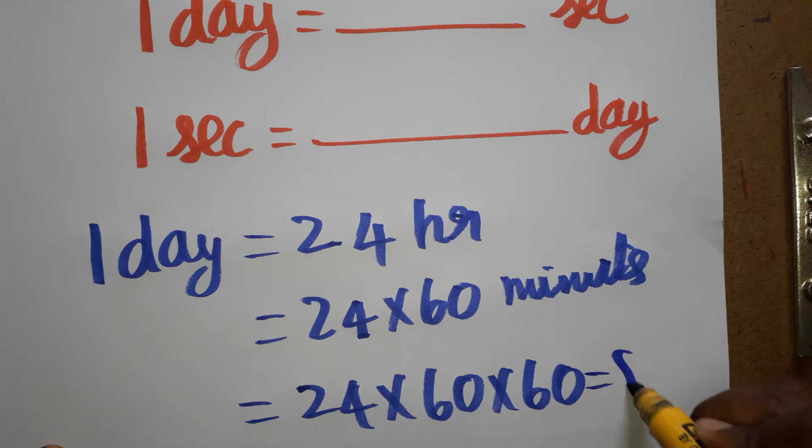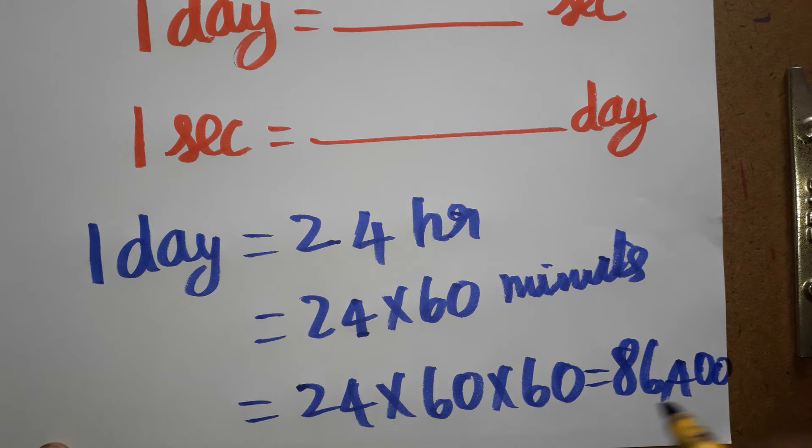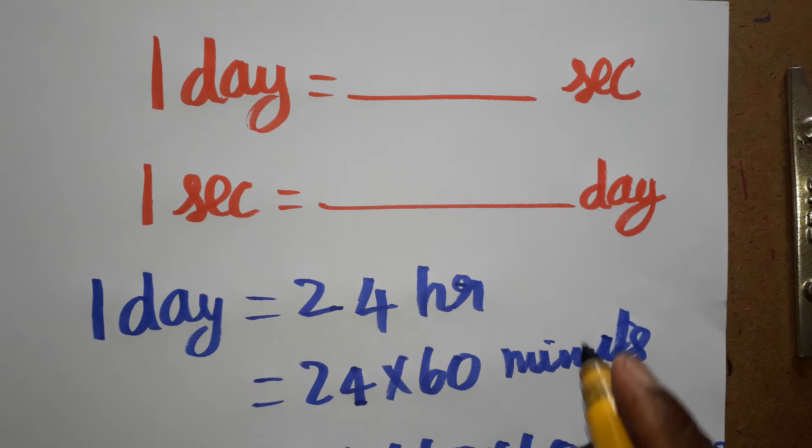So we will get this multiplication: 86,400. So one day has this much seconds, okay. 86,400 seconds.